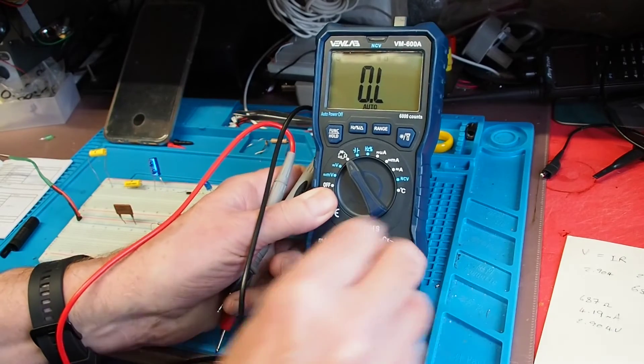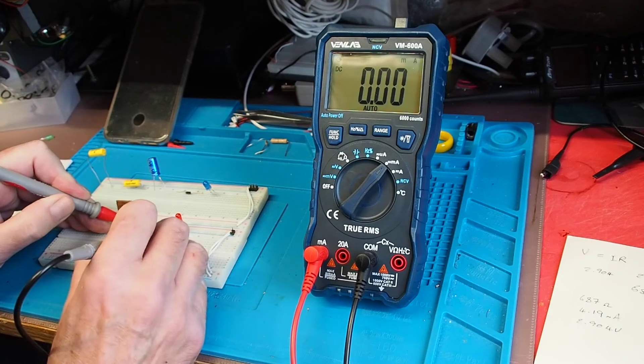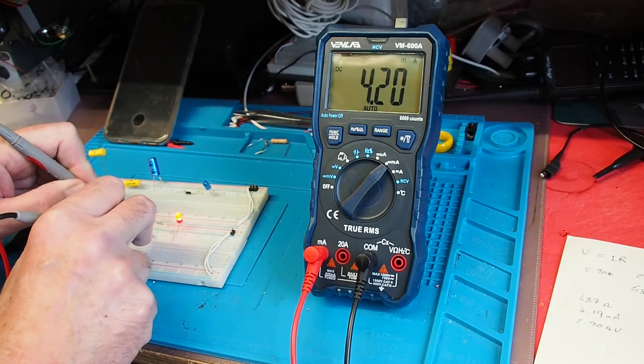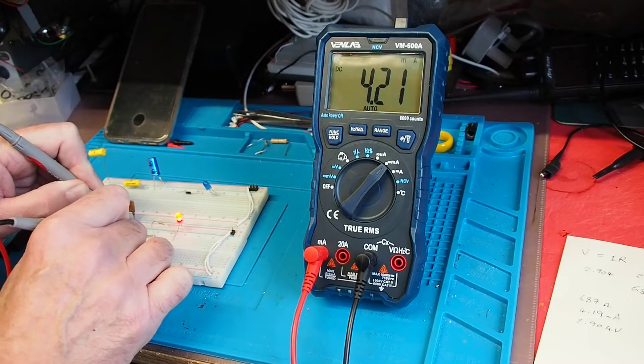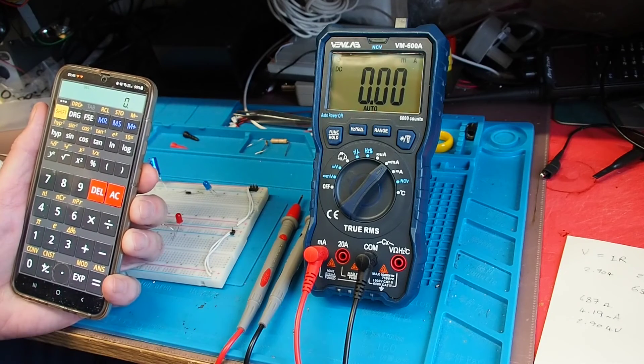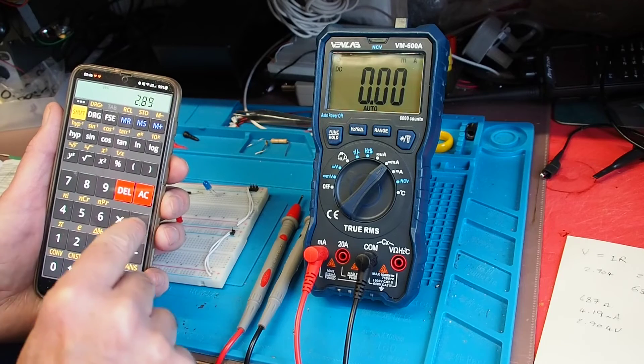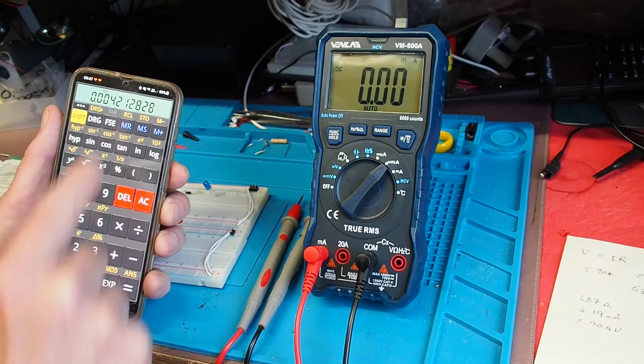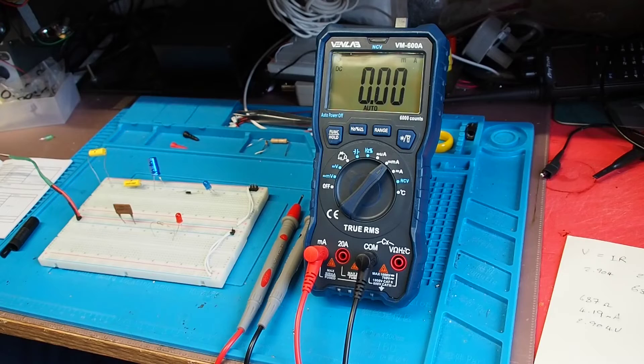Now I'm going to move the positive lead to the milliamp range, we'll put the meter in circuit with the LED and the resistor and see what we get. We're actually getting a measured current of 4.2 milliamps. Let's see if the math agrees with that. We've got V equals IR, so if we divide 2.89 volts by 686 ohms, gives us 0.0042 amps or 4.2 milliamps, so bang on. The meter certainly agrees with itself, and in the bargain there you got free revision on Ohm's law.